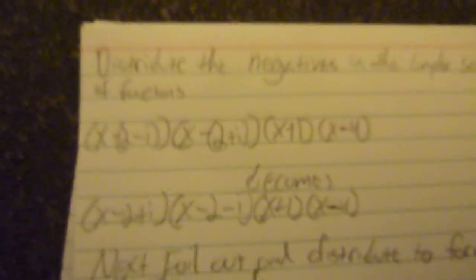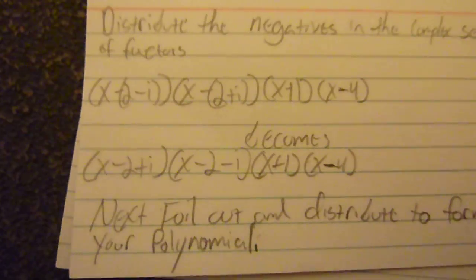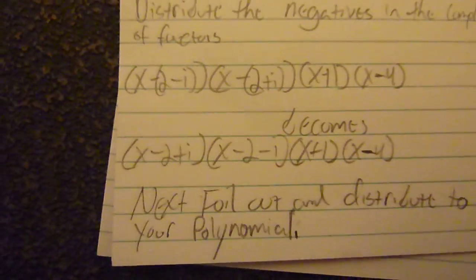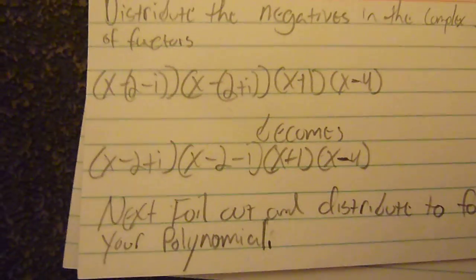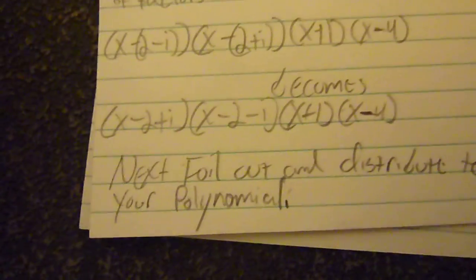Next thing you want to do is distribute the negatives in the complex series of factors. So for the x minus negative 2 minus i and the x minus negative 2 plus i, just go ahead and distribute the negatives. So then you just get rid of the parentheses. It just makes it easier to deal with.